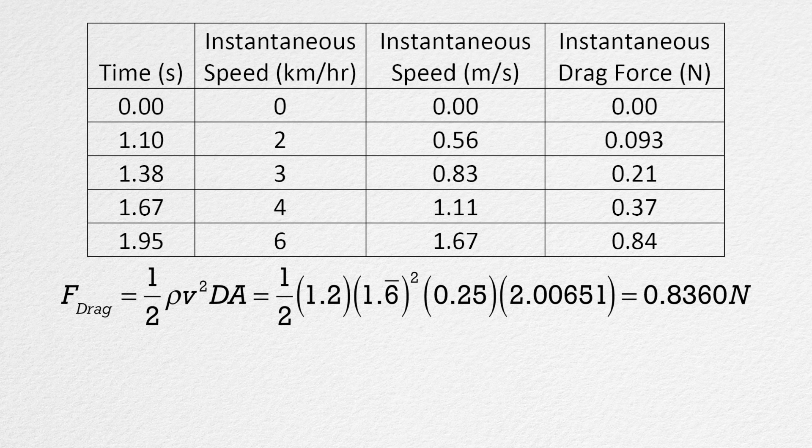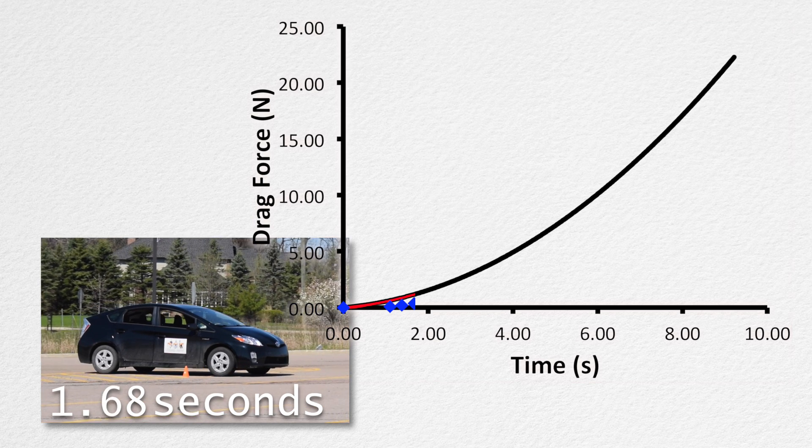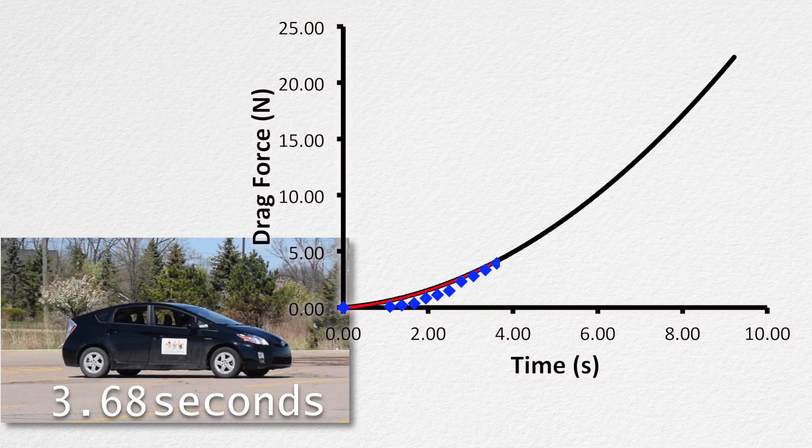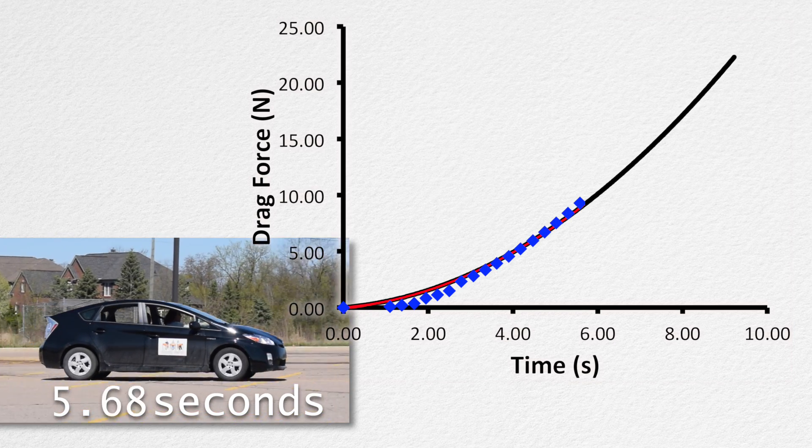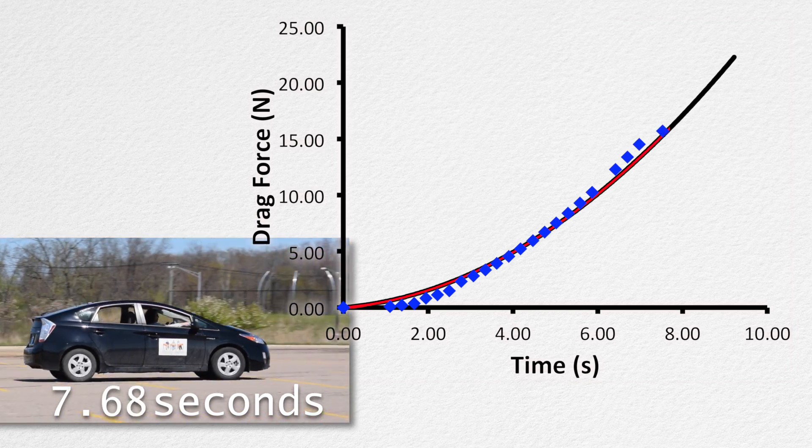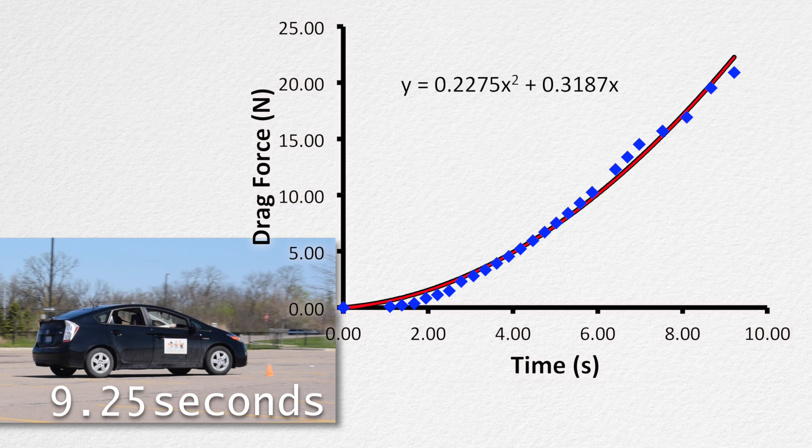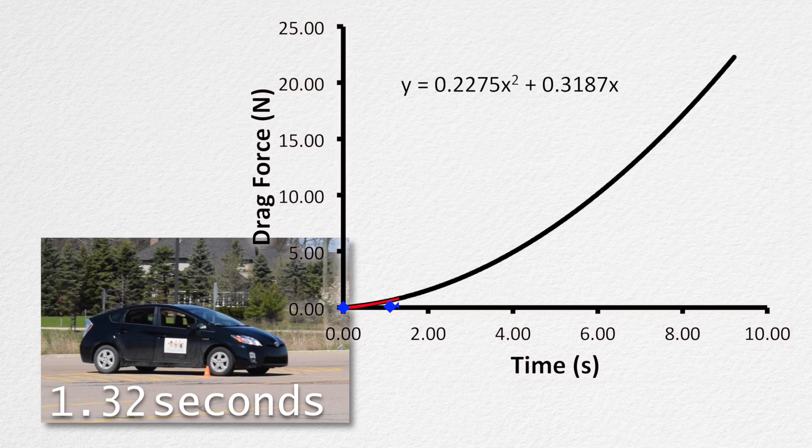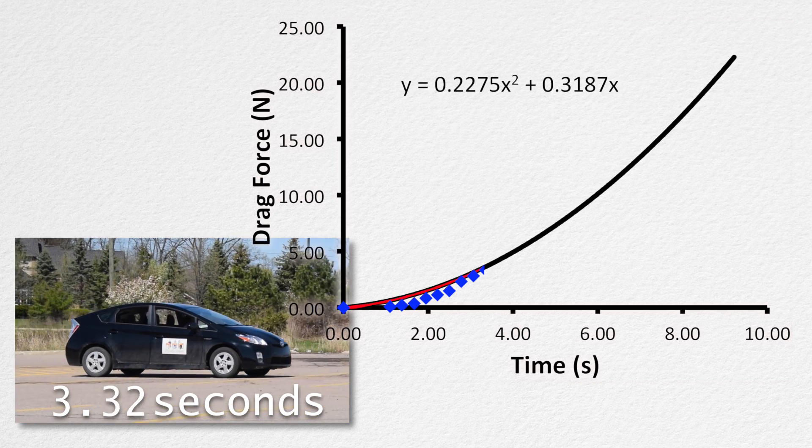The next step is to graph the force of drag as a function of time. The equation for the best fit curve as reported by our spreadsheet program is y equals 0.2275 times x squared plus 0.3187 times x.